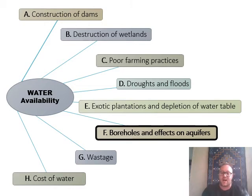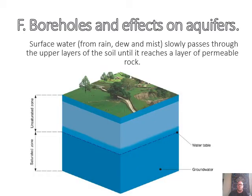Boreholes and the effects on aquifers. Surface water from rain, dew, and mist - all types of precipitation - slowly passes through the upper layers of the soil until it reaches a layer of permeable rock. Permeable means it allows water through. This rock is quite tightly packed at the bottom but looser on the way up, and can actually hold onto a lot of that water as it goes along.